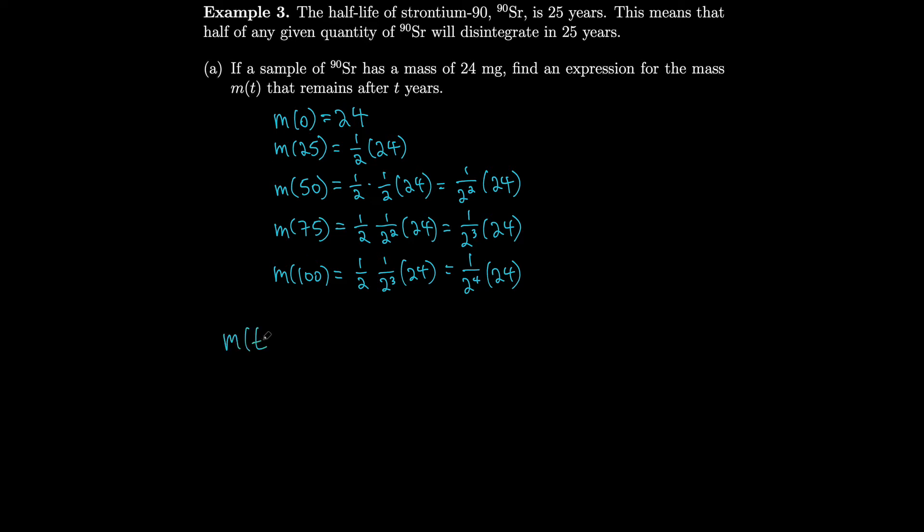So I think we have enough. We can write m of t equals 1 over 2 to the t divided by 25. t is 100 divided by 25, I get 4. Can't forget to multiply by 24 though. We can simplify that a little bit. We get 24 times 2 to the minus t over 25. And I don't know if that's really simplifying, but it expresses it more clearly as an exponential function. We could even pull out the t if we want. So if we do that, we get 24 times 2 to the minus 1 over 25 to the t.